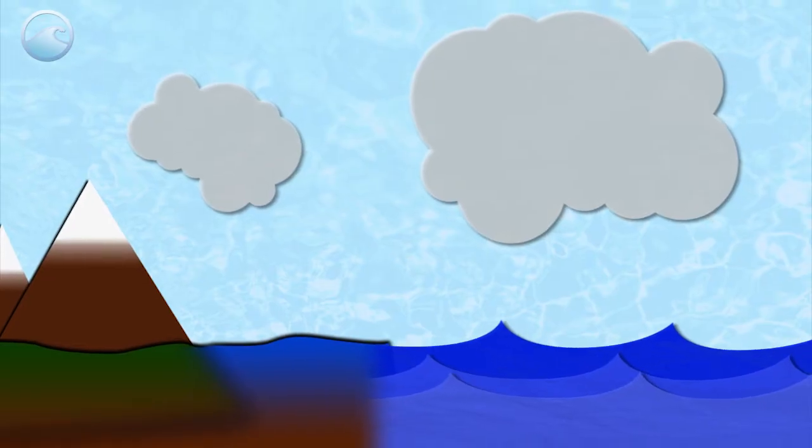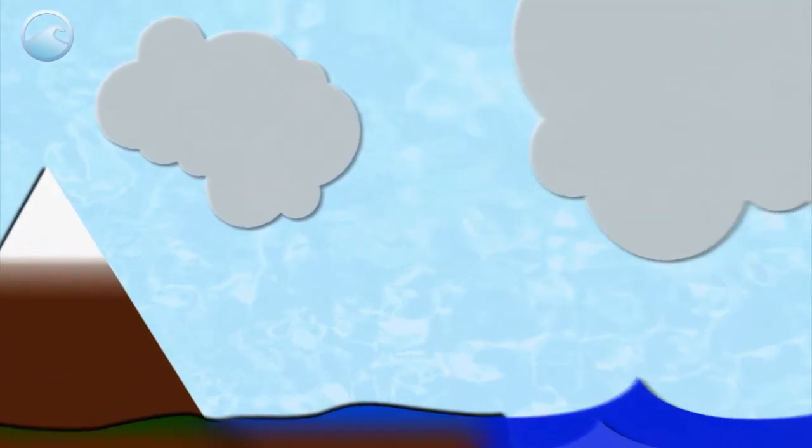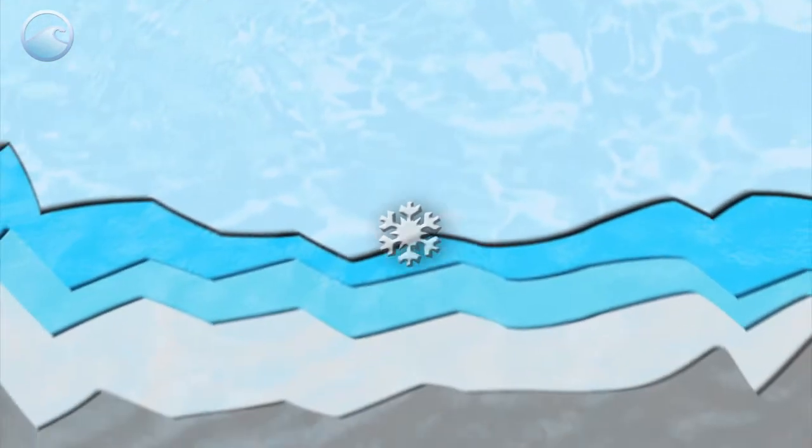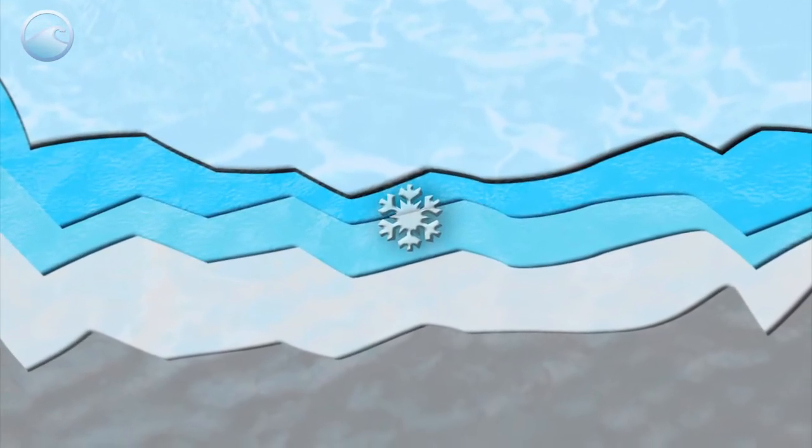That's just one path water can take through the water cycle. Instead of snow melting and running off into a river, it can become a part of a glacier and stay there for a long, long time.